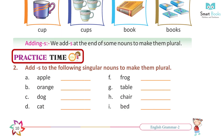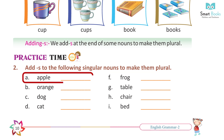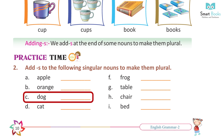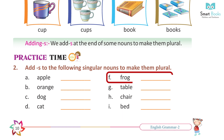Practice Time 2. Add S to the following singular nouns to make them plural. A. Apple — apples. B. Orange — oranges. C. Dog — dogs. D. Cat — cats. F. Frog — frogs.